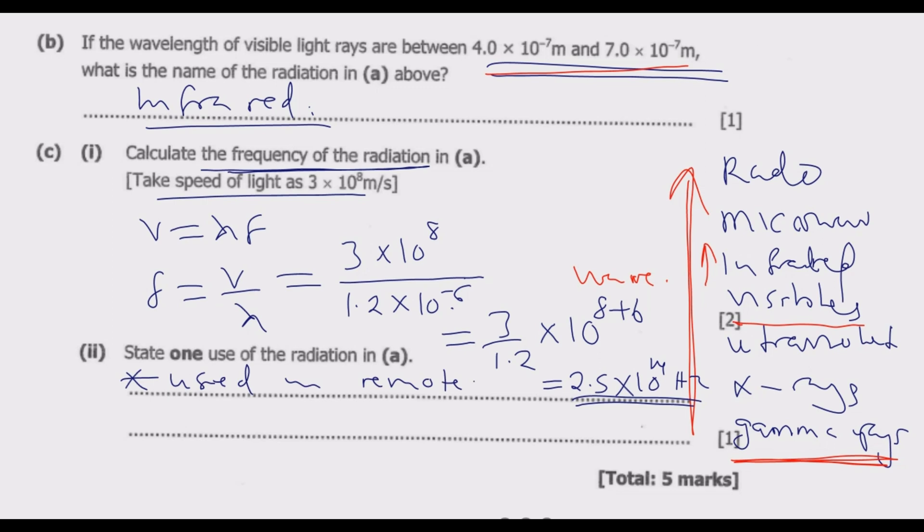Infrared are used in remote control, used for TV and other appliances. Number two: infrared is used to detect spatial temperature. Those machines that are used to detect eye temperature during the COVID pandemic used infrared.